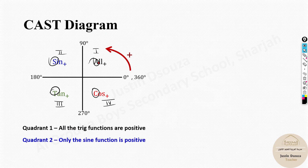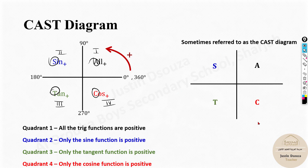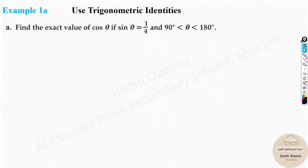The acronym CAST summarizes this: starting from the fourth quadrant and going counterclockwise — C (cosine positive), A (all positive), S (sine positive), T (tangent positive). Also remember: reciprocal functions follow the same sign as their counterparts — csc follows sin, sec follows cos, and cot follows tan.